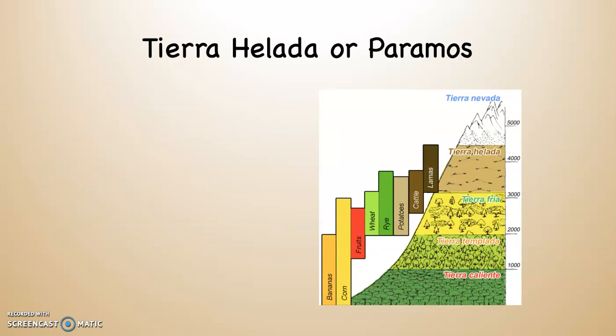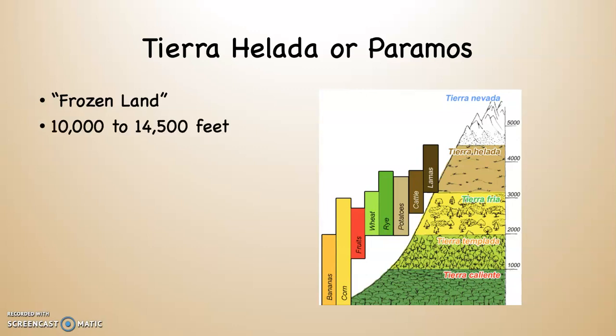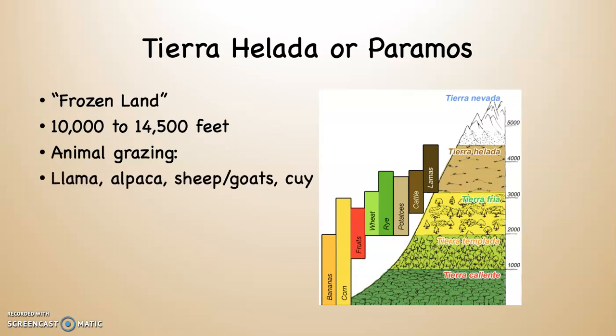As you move even higher, from about 10,000 to 14,500 feet, you reach the tierra helada or paramos — 'frozen land.' Paramos is used in Venezuela; most other countries call it tierra helada. Because it's so cold, this zone switches to animal grazing. Animals eat what grows there and convert it into milk, meat, bones, and fur. The most common animals are the llama, alpaca, sheep, goats, and kui — guinea pig — which is also native to the Andes.